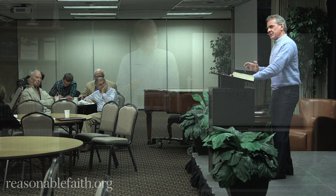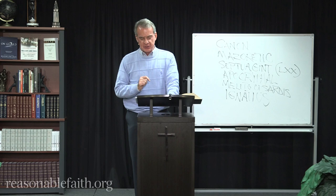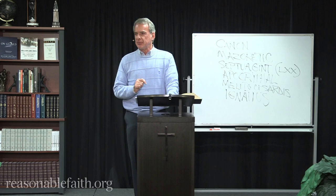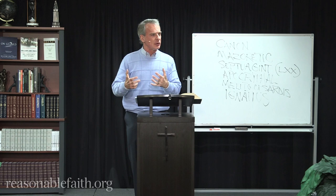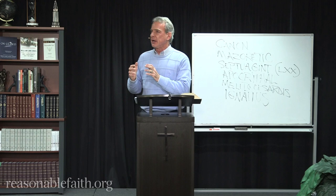Even those who doubted the canonicity of some books always accepted the four Gospels, the book of Acts, 13 letters of Paul, 1 John, and 1 Peter. That is already a substantial enough canon to establish fundamental Christian doctrine as authoritative. These books were accepted even by persons who doubted some of the other books eventually included in the canon. In the eastern Greek-speaking empire, doubts were expressed about the book of Revelation. In the west, some church fathers expressed doubts about the book of Hebrews.